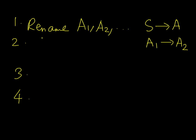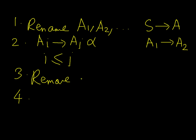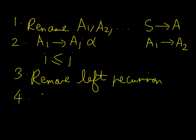The next step is: for every single production of the type Ai produces Aj something, make sure that i is always less than or equal to j. If it is not, then modify the production to make i less than or equal to j. The next step is to remove left recursion in all the productions. The last step is to get everything in GNF form.